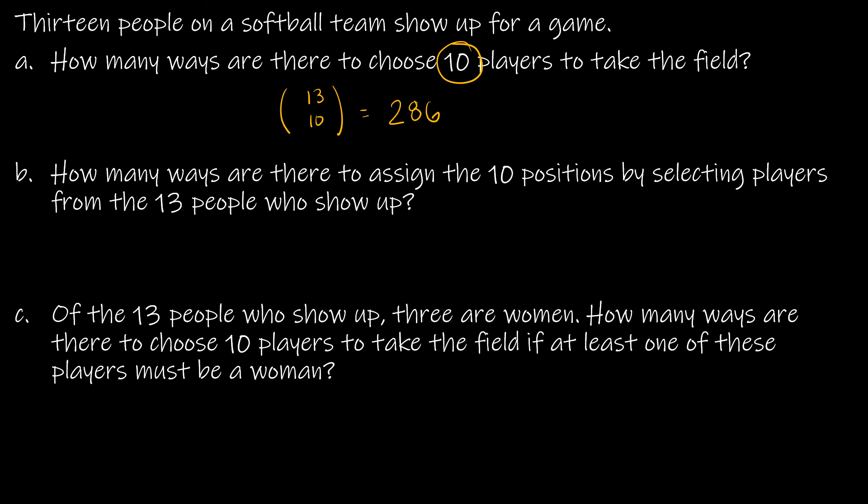For part B, how many ways are there to assign the 10 positions by selecting players from the 13 people who show up? So this is now no longer a combination. We're actually assigning the positions. So this is going to be a permutation of 13, 10. So this is going to be 13 factorial over 13 minus 10, or 3 factorial. That is going to give me a much larger number. So 1,037,836,800 different ways to assign the positions. Again, leaving your solution just like this is perfectly acceptable.